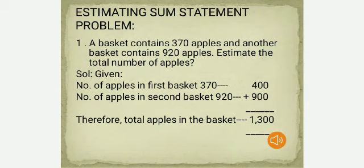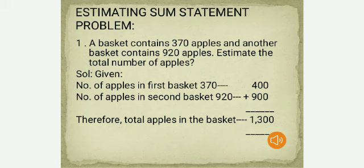Statement problem: a basket contains 370 apples and another basket contains 920 apples. Estimate the total number of apples. For 370, the next digit after the hundreds place is 7, which is more than 5, so round up to 400. For 920, the next digit is 2, less than 5, so round down to 900. Therefore, the total estimated apples is 1,300.